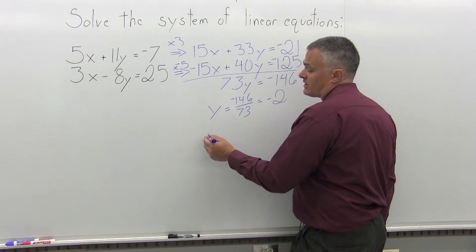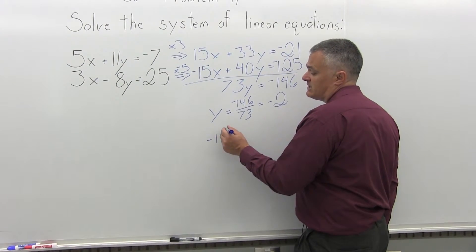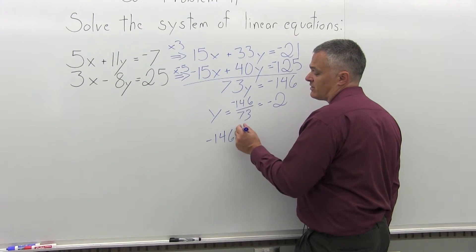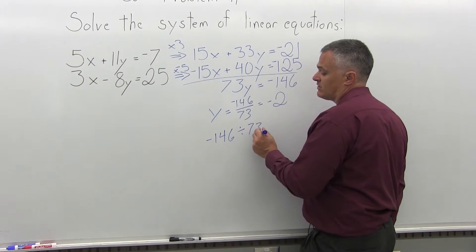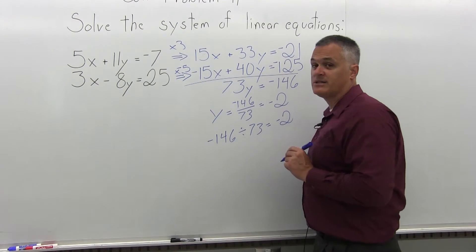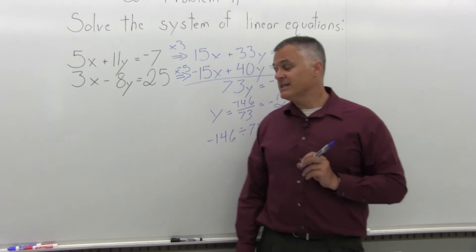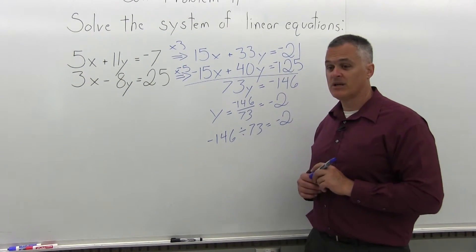Again, I can see that in my head without the calculator. But if you don't see it easily, just take your calculator. Negative 146 divided by 73 equals, and you will certainly get that y is equal to negative 2. So that's the end of step 3. I solved for the remaining variable.